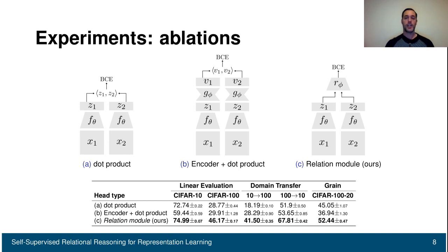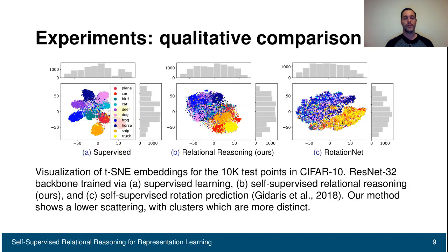This confirms that the relation head is fundamental — without it, there is a drastic drop in performance. We also show qualitative comparisons by projecting the representations onto a Cartesian plane using t-SNE, done on CIFAR-10 with different colors for the 10 classes. Comparing relational reasoning (center) with RotationNet (right), relational reasoning shows better differentiation between different clusters and classes.